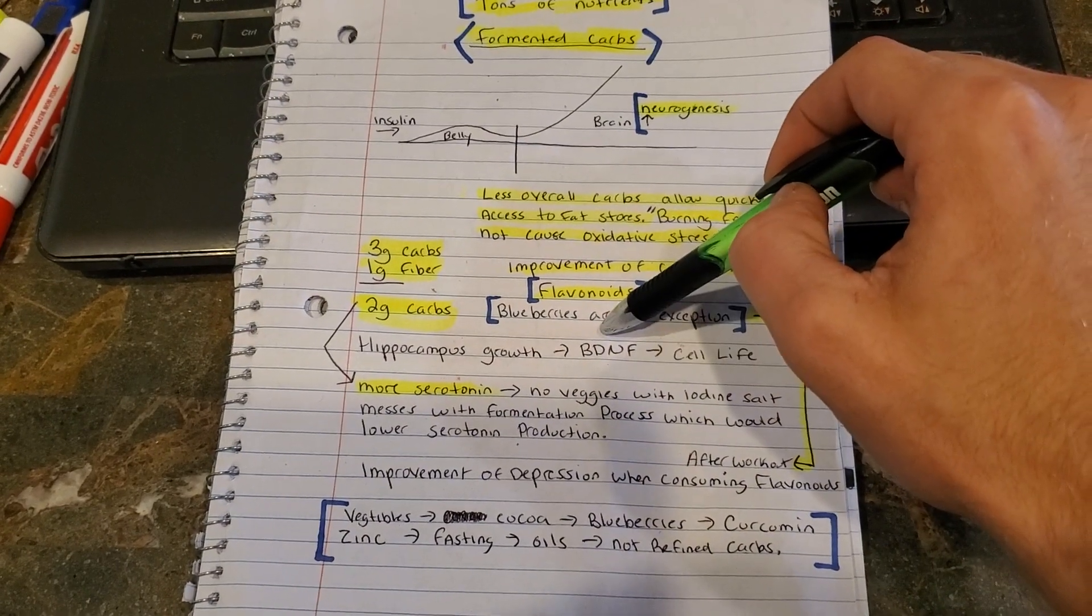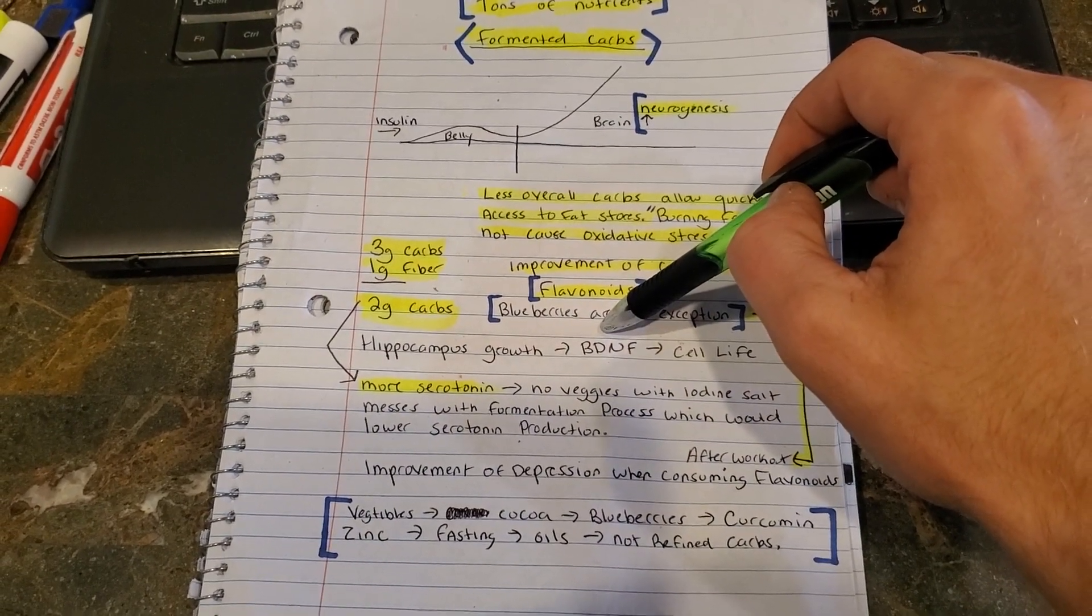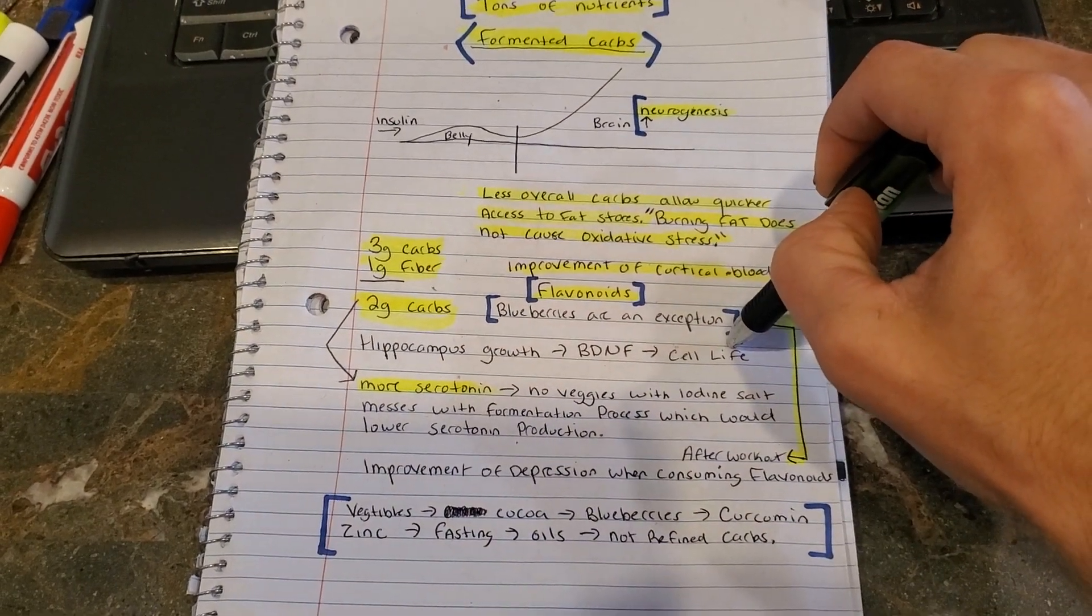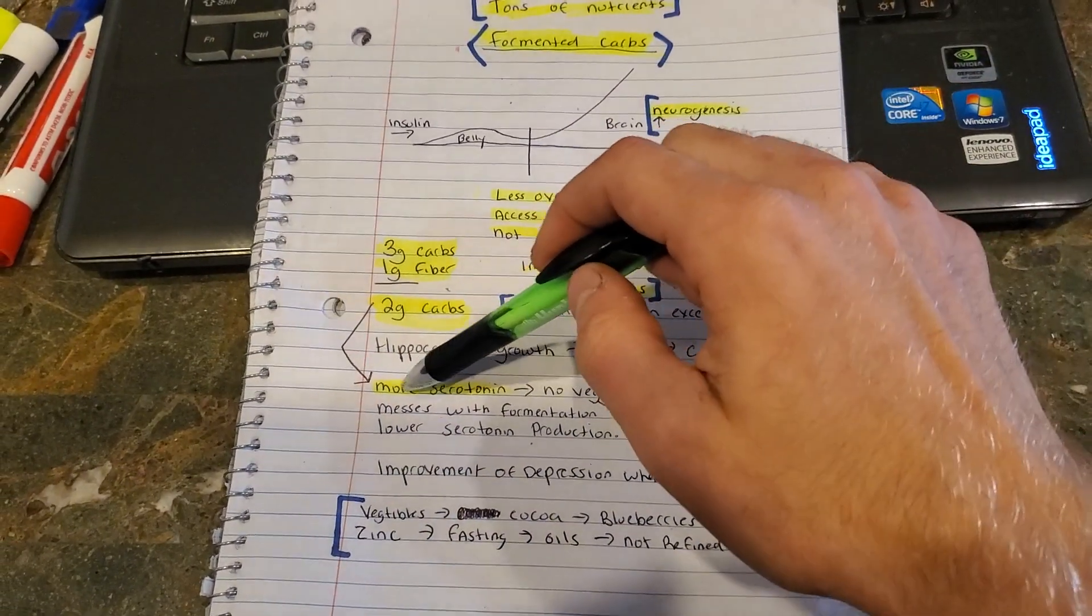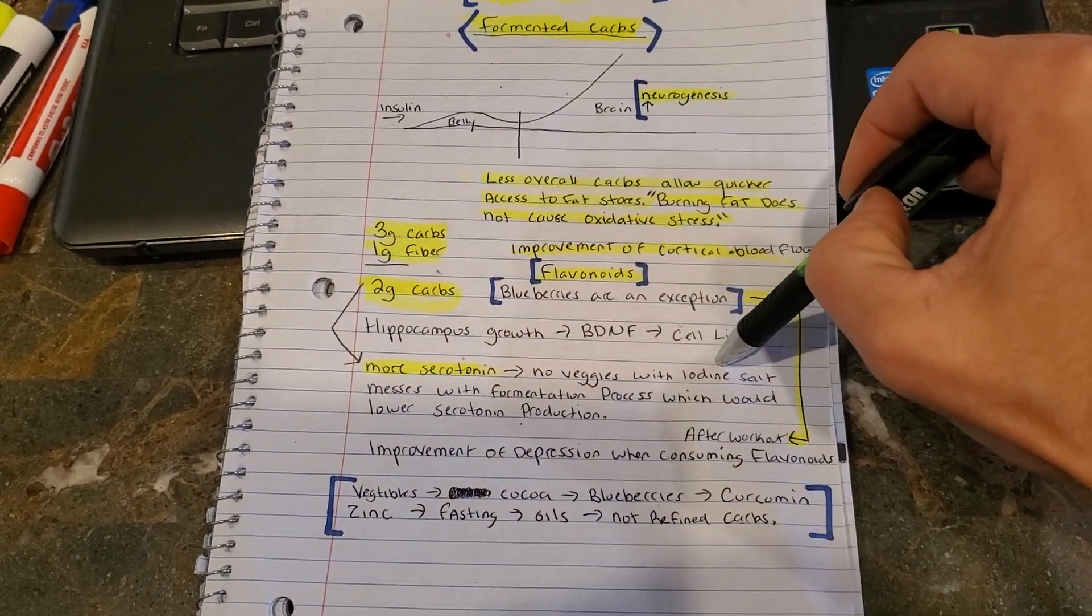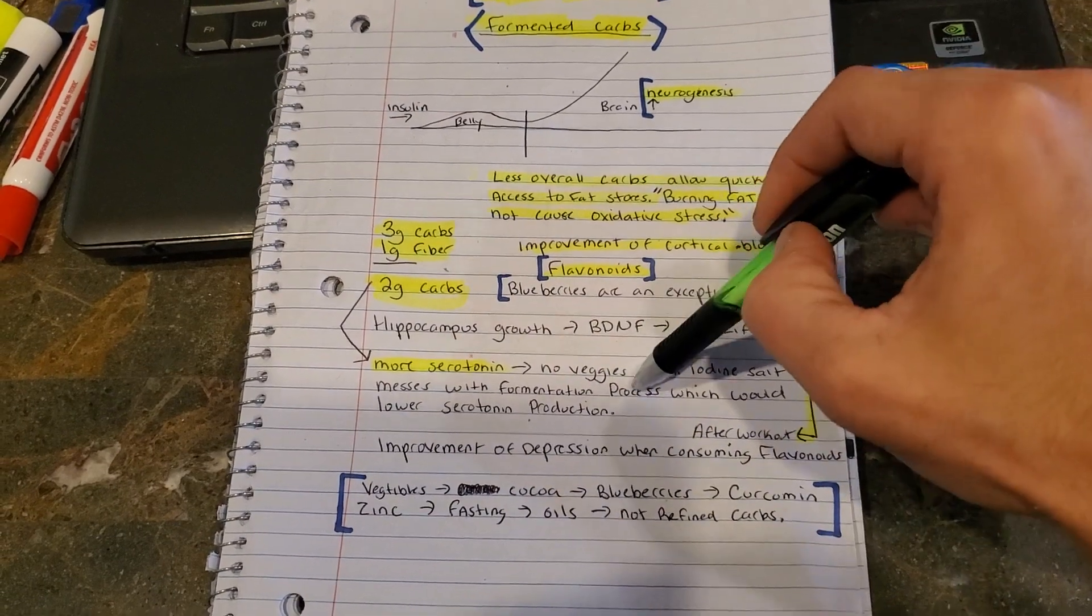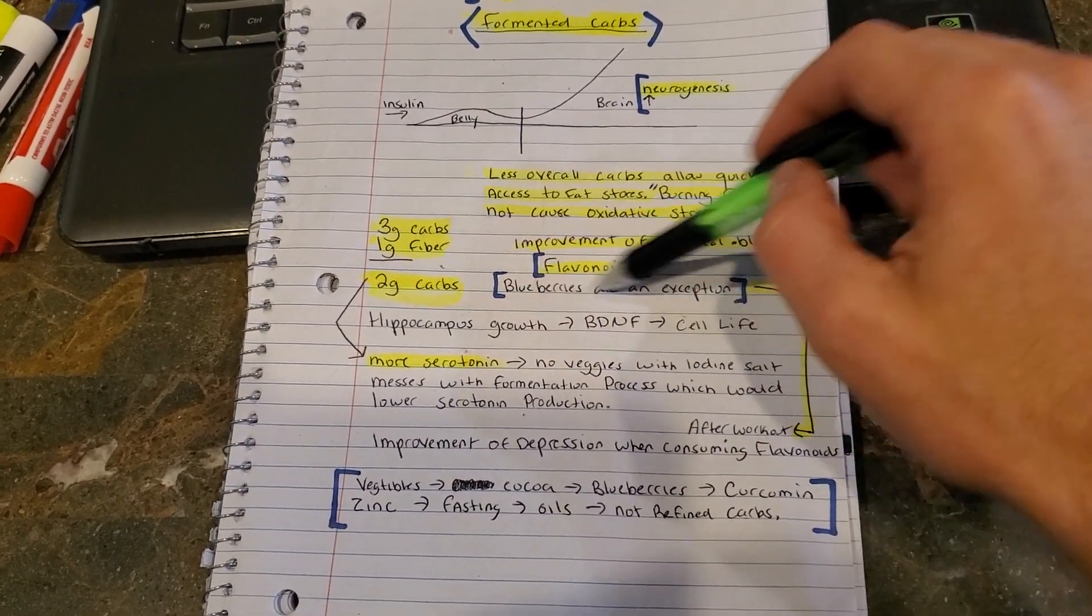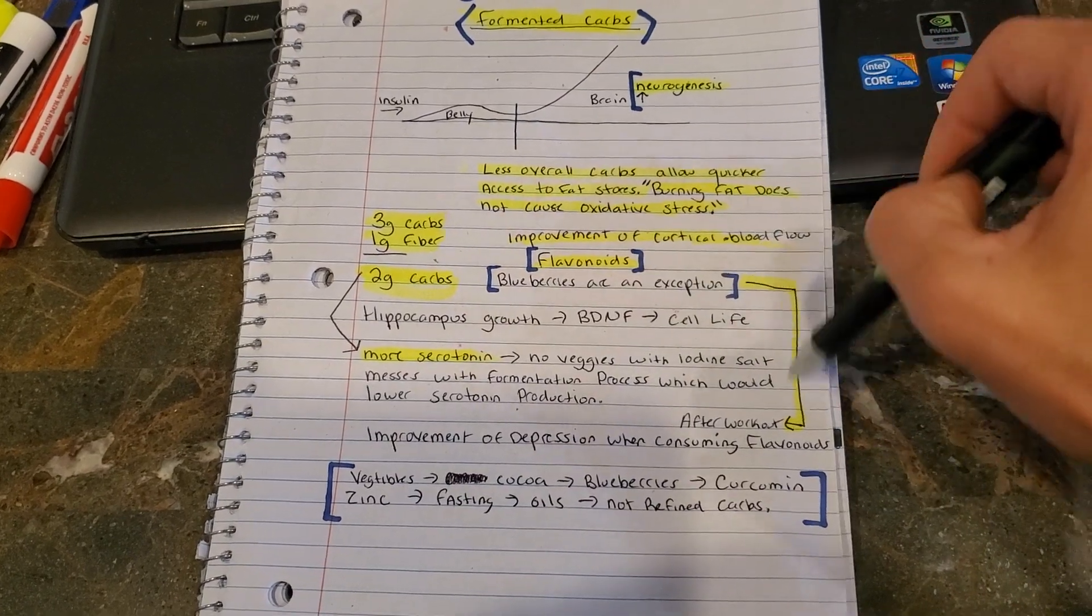So blueberries are extremely good because they have flavonoids in them, okay? Two grams of carbs are bad. Hippocampal growth, your BDNF, and cell life, those are the things that you want to focus on. You want to grow your memory and learning centers. They did a giant study about BDNF, exercising, keto, the things that will actually increase it inside of your body. And then overall, you're not going to cause oxidative stress, so your cells are going to stay alive.